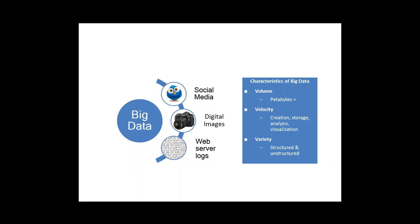The three V words that rise to the top most often are volume, velocity, and variety. With big data, we're talking about tremendous volume — a petabyte or more. Just to give you some context, a petabyte of data is a million gigabytes. The flash drive I brought my presentation on is an eight-gigabyte flash drive. It would take 125,000 of those eight-gigabyte flash drives full of information to comprise a single petabyte. That's the scale we're talking about with big data.